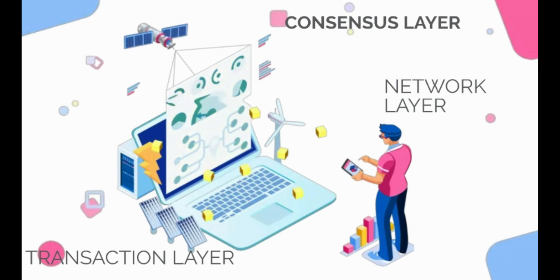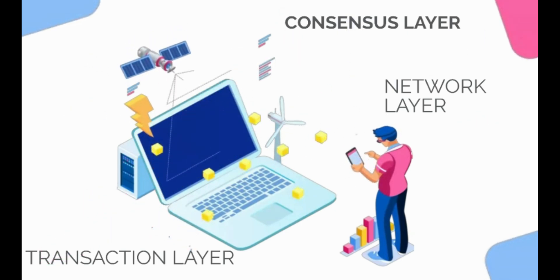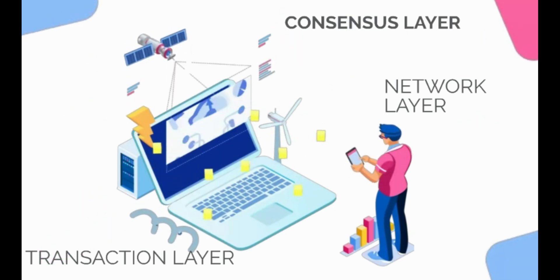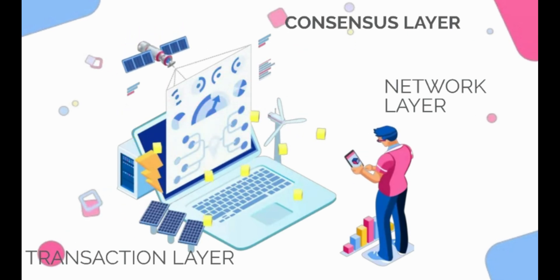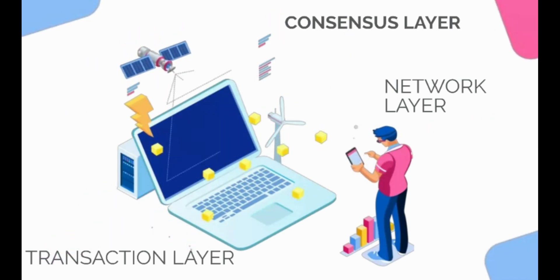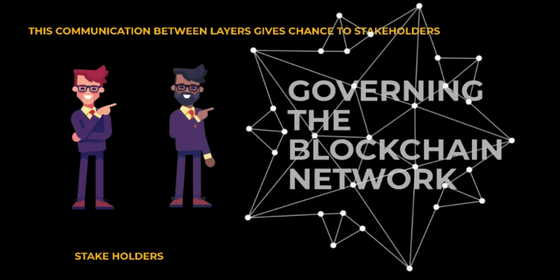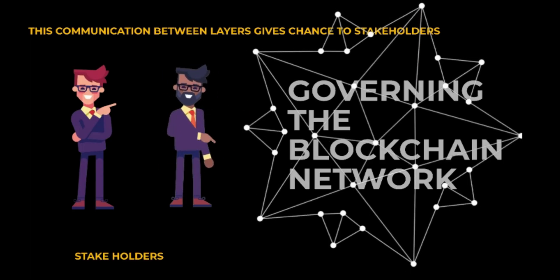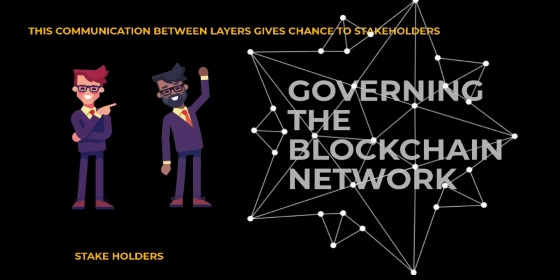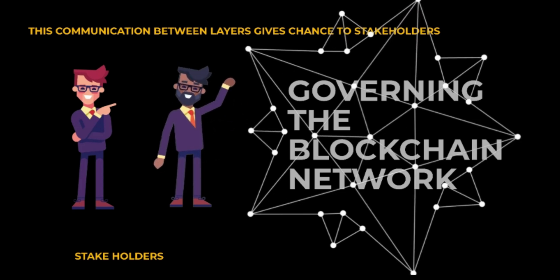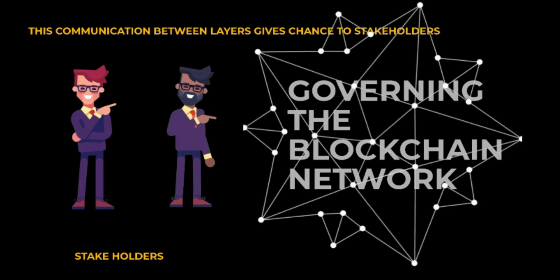This architecture allows seamless communication between the blockchain and network layers, while the network layer remains agnostic to the other two layers. This communication between layers gives stakeholders the chance to govern blockchain network upgrades and changes in a democratic manner.